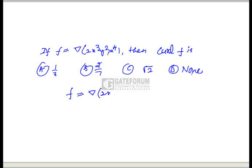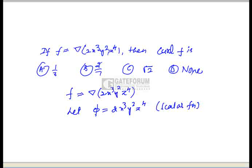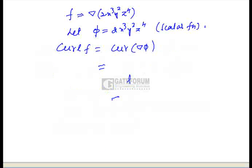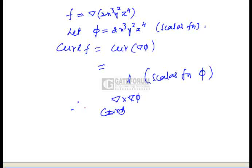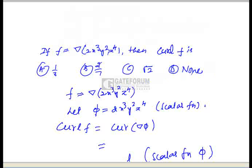In this problem, the given function is f = ∇(2x³y²z⁴). Let φ = 2x³y²z⁴, which is a scalar function. We need to find curl f = curl(∇φ). We know that curl(∇φ) = ∇ × ∇φ, which is always equal to zero for any scalar function φ. Therefore curl f = 0, which is option D.